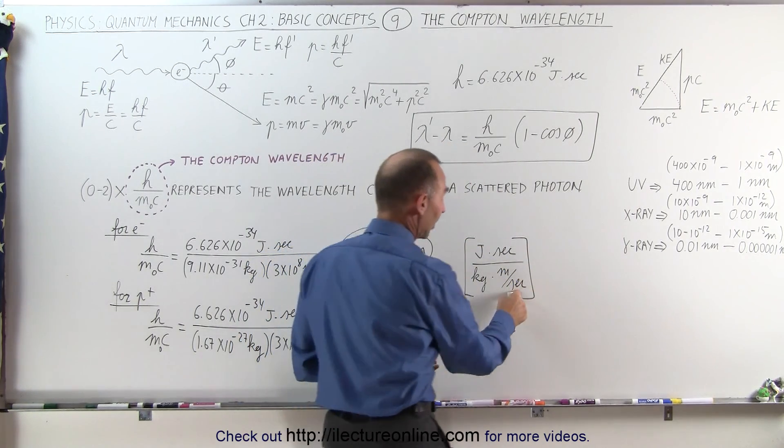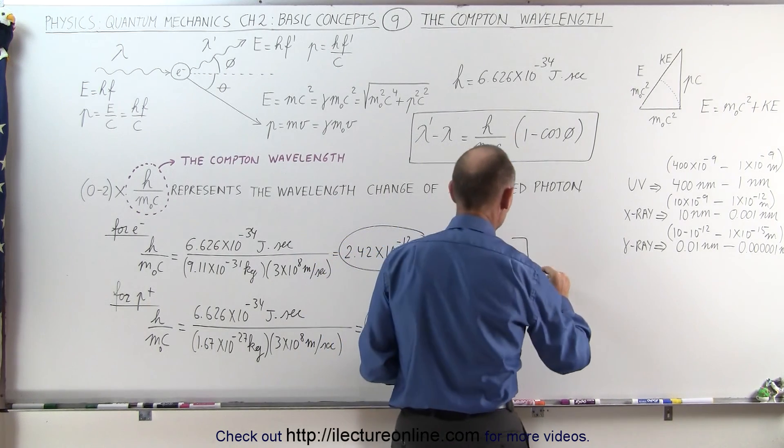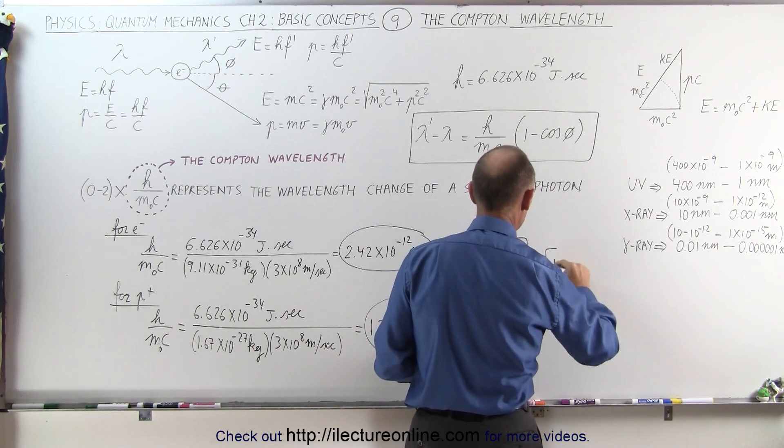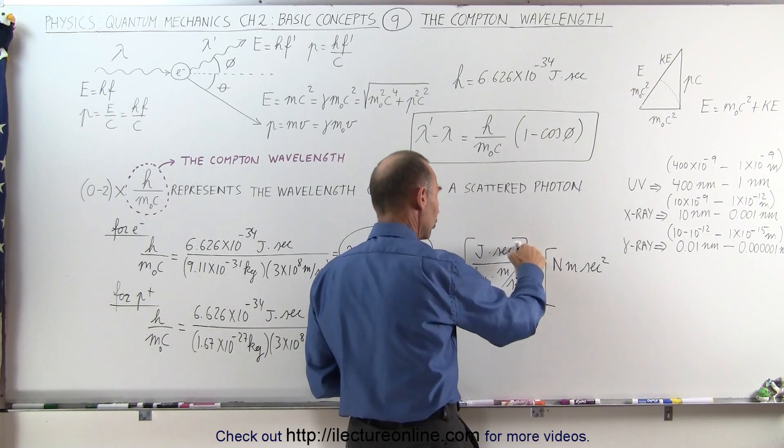How does that end up being meters? Well, first of all, we can take this seconds and move to the numerator, and joules is Newton times meters. So this can be written as a Newton meter second squared by taking this one over seconds to the numerator.